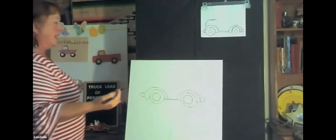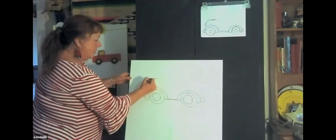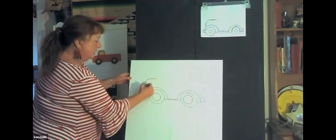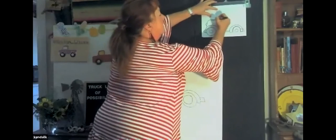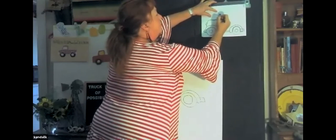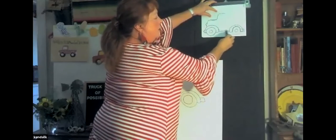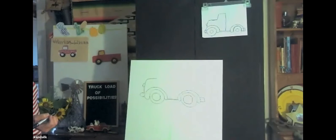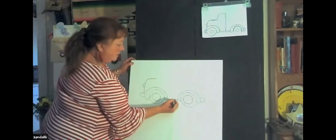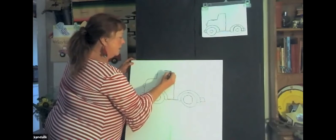We're going to do another backward seven, and then we'll have a line that comes about halfway between the two fenders — a vertical line, straight up and down, just like that. Here is my straight up and down vertical line, here is the hood of my truck.